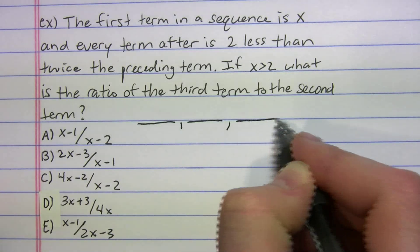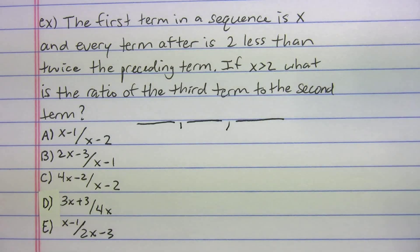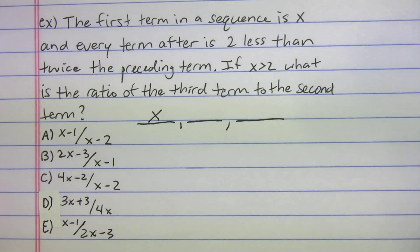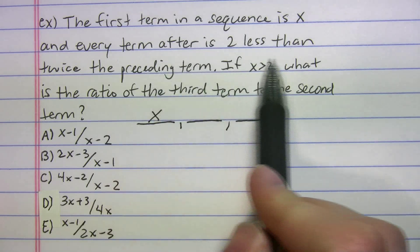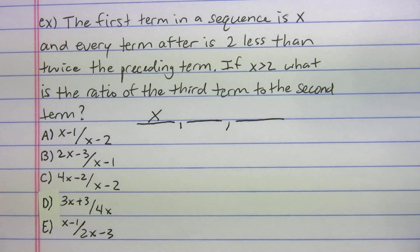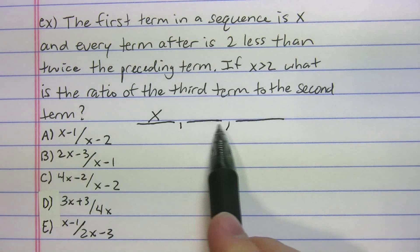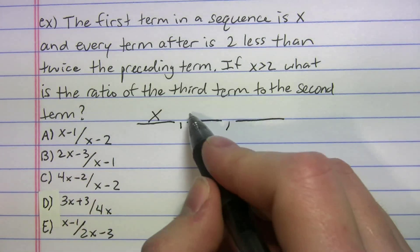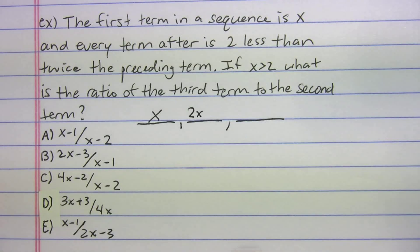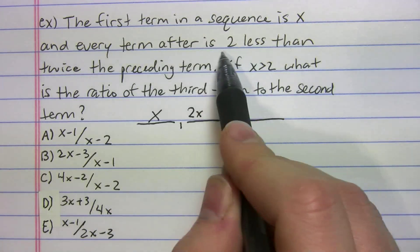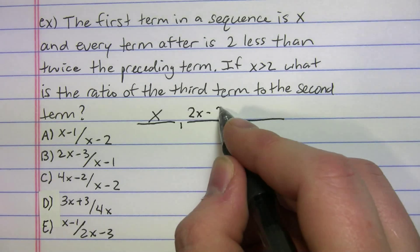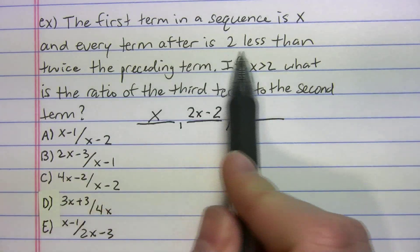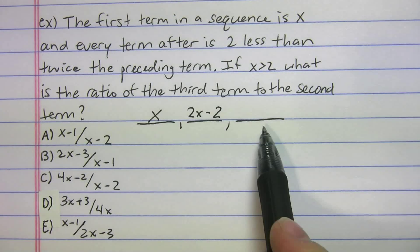We'll do it algebraically first. First spot, they told us is X, right? And every term after is two less than twice the preceding. So to find this spot here we have to multiply by two - twice the preceding - so it's going to be 2X, and then is two less, so minus 2. We have to multiply first, then we do the two less.